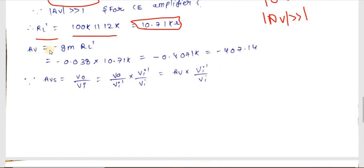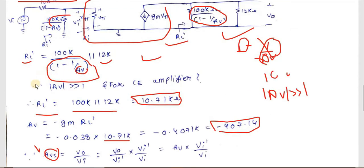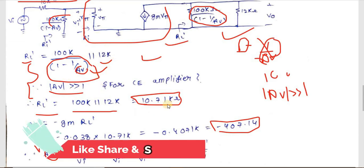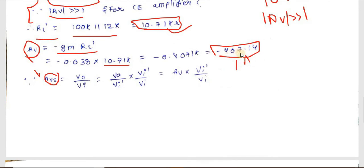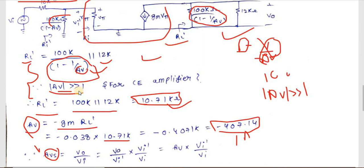The internal voltage gain is Av = −gm × RL' = −0.038 × 10.71k = −407.14. This confirms |Av| >> 1, so the earlier approximation is valid. Always apply the condition |Av| >> 1 whenever using Miller's theorem in CE amplifier problems.